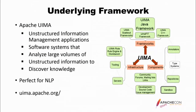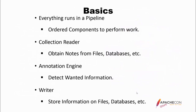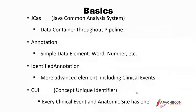UIMA is perfect for NLP. The idea is you build a pipeline — everything runs in a pipeline. A pipeline consists of ordered components to perform the work. Basically, a pipeline consists of a collection reader, which obtains notes from various sources — these can be files, databases, or a REST entry point. The pipeline also has one or more annotation engines, which detect and modify your information of interest, and at least one writer to store information wherever you like.